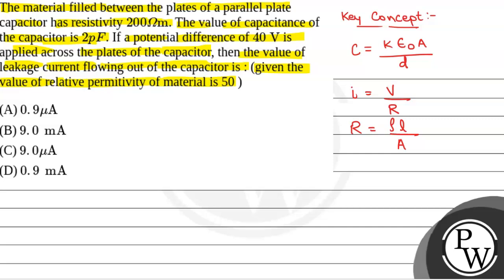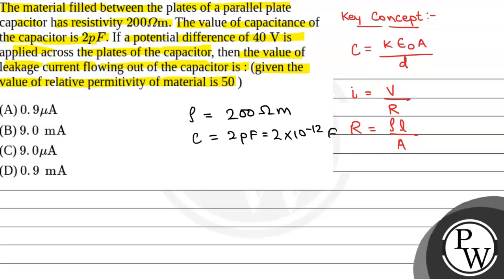We have been given resistivity of filled material: ρ is equal to 200 ohm meter, and capacitance of capacitor C is equal to 2 picofarad, that is 2 into 10 to the power minus 12 farad. And K, that is relative permittivity of material, is 50. Also, potential difference applied across the capacitor is 40 volt.